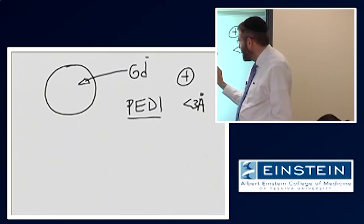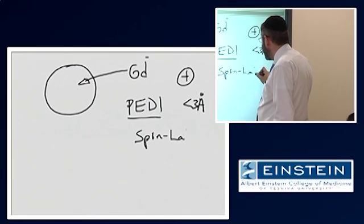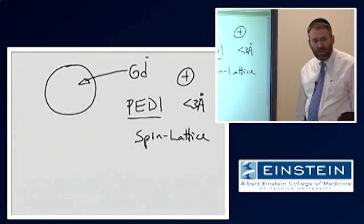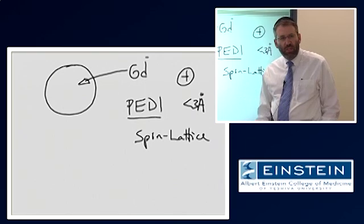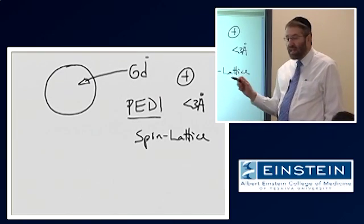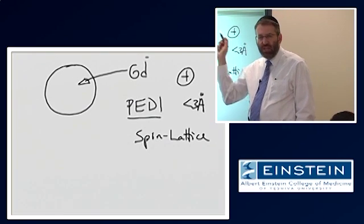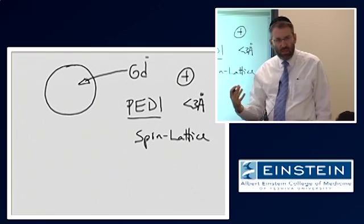This is an example of spin-lattice relaxation. When you give someone gadolinium, you're adding something to the lattice that dramatically increases the probability that a spin-lattice energy exchange will occur. That's what gadolinium is doing at a quantum-mechanical level.